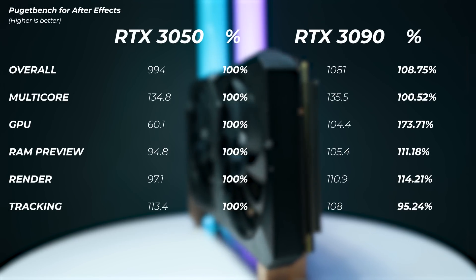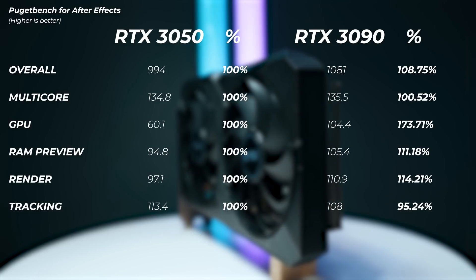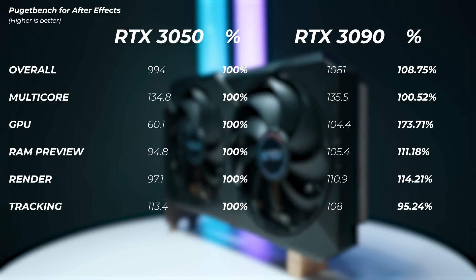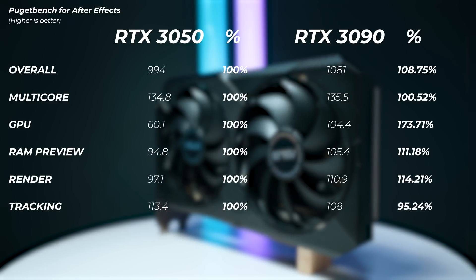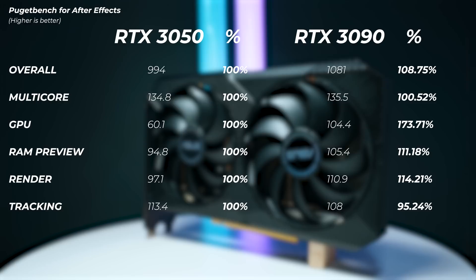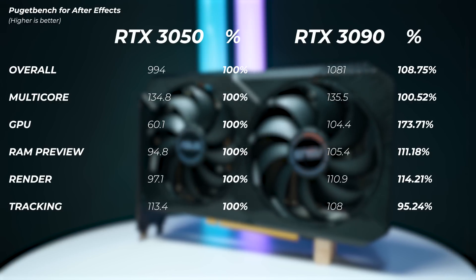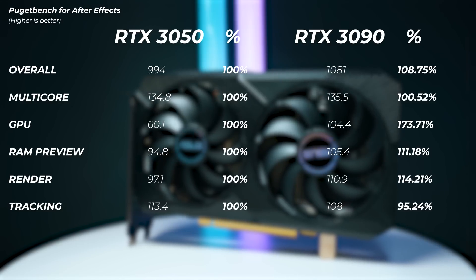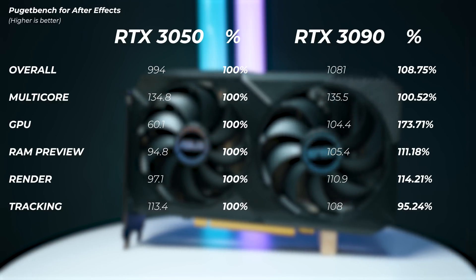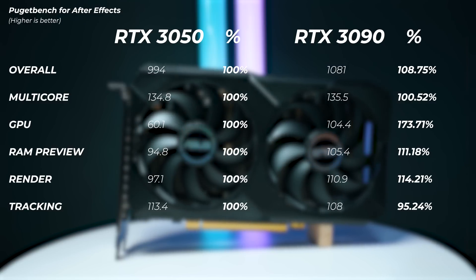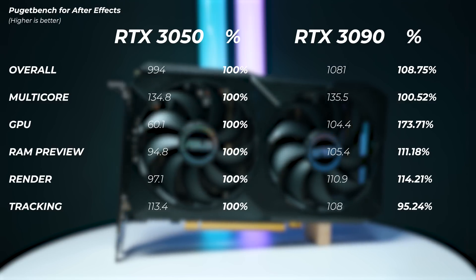In Adobe After Effects, the RTX 3090 is only 8.7% faster, yet about five times as expensive as the 3050. For video creators using the Adobe suite, you may not need a high-end graphics card — if you're doing simple work without heavy effects, the RTX 3050 is very capable, and it's better to put your budget toward the CPU.